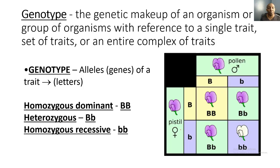Now let's take a look at genotypes. Genotypes are the genetic makeup of an organism with reference to a single trait, set of traits, or an entire complex of traits — this is how we all come out different, because we all have different genotypes. The alleles for the genes of a trait are represented by letters: capital B and lowercase b, for example. To review: homozygous dominant means two capital letters; heterozygous dominant means a capital letter and a lowercase letter; homozygous recessive means two lowercase letters.